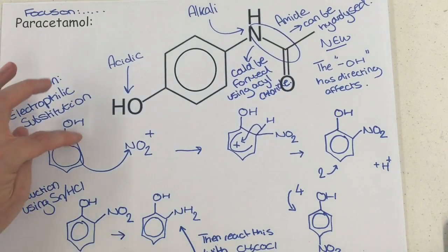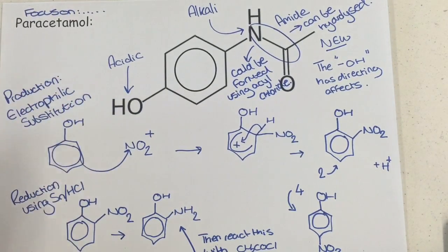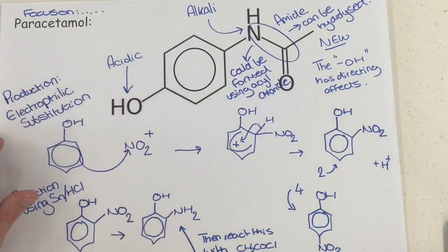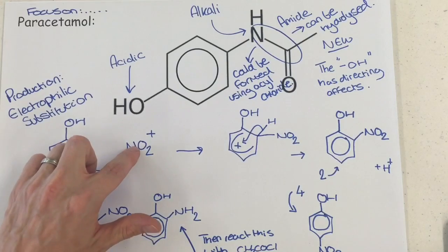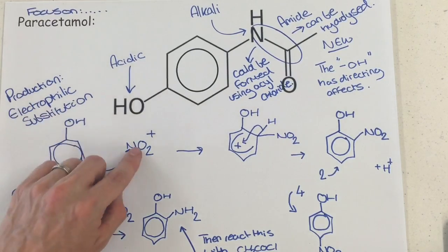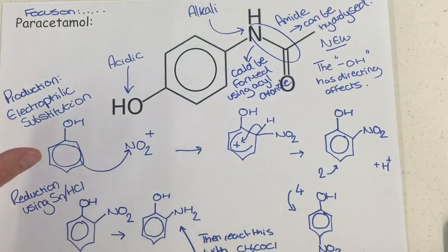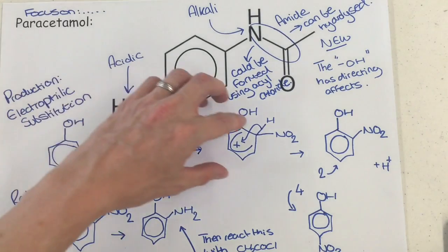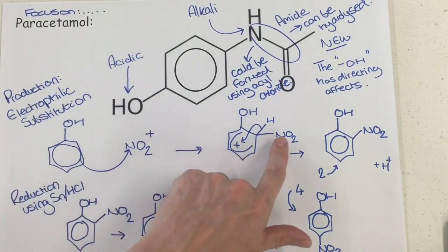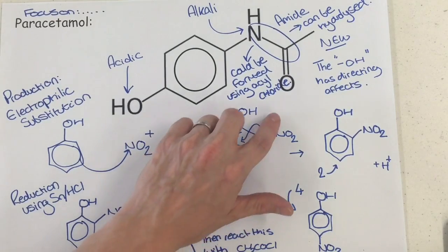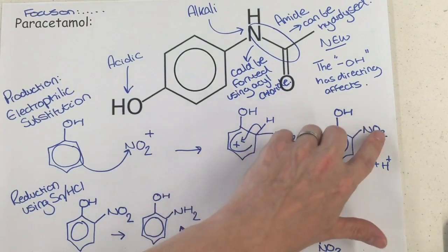We start off with a molecule of phenol, and this reacts in an electrophilic substitution mechanism. We've got the NO2+ electrophile, which comes from nitric acid and sulfuric acid, with the sulfuric acid being the catalyst. The temperature for this reaction is around 55 degrees C. We can see the delocalized ring structure of electrons picks up the electrophile, which is the NO2+, sometimes described as the nitronium electrophile. An intermediate forms with broken aromaticity, and then a bond to hydrogen is broken, leaving the NO2 in position.